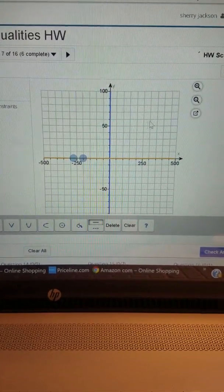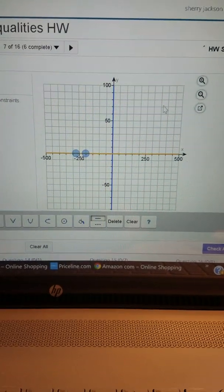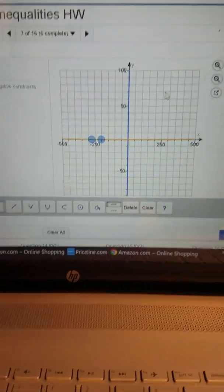So right now the feasible set or solution set or where all the shading is overlapping is in the upper right-hand section of the graph.